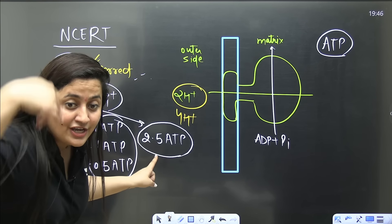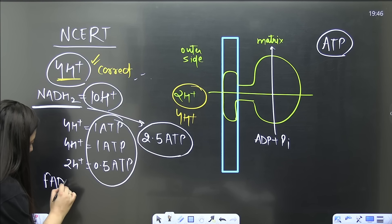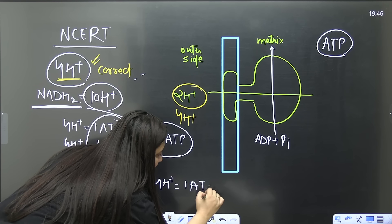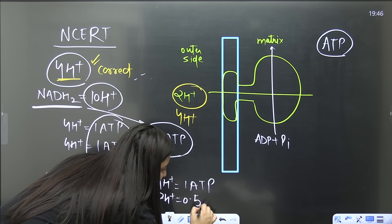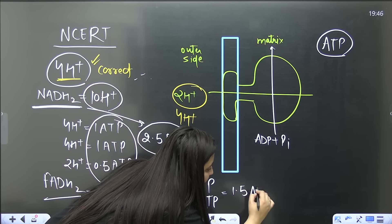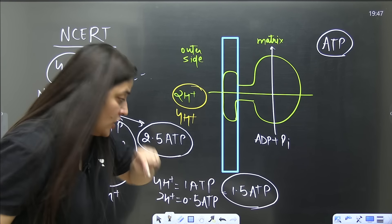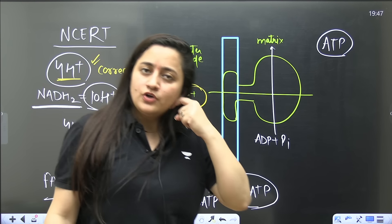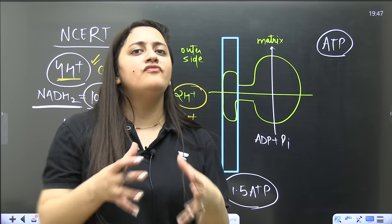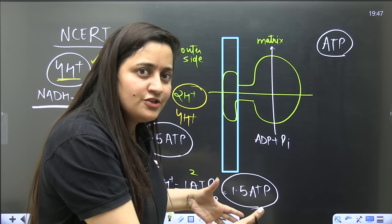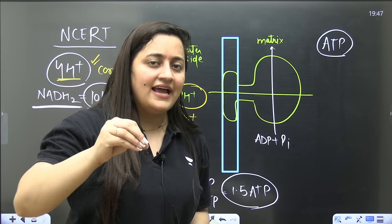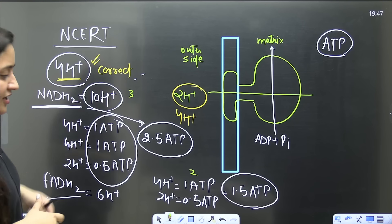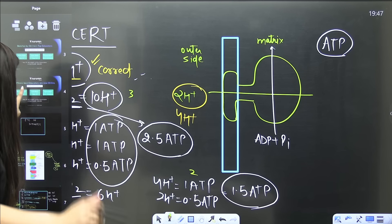For FADH2 with 6 H⁺: 4 H⁺ give 1 ATP and the other 2 H⁺ give 0.5 ATP — so FADH2 yields 1.5 ATP. This is the actual correct concept. Although NCERT mentions 3 ATP for NADH2 and 2 ATP for FADH2 in older text, the actual values are 2.5 and 1.5 respectively. Even NTA has accepted this corrected logic when challenged in previous year papers, so follow the actual concept in your exam.